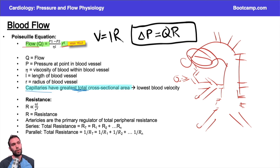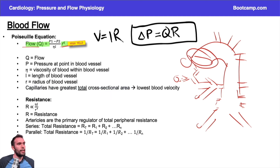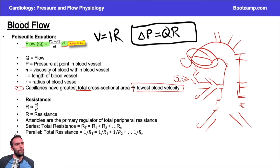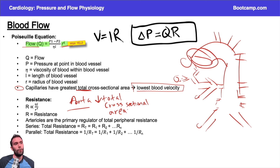If I increase the cross-sectional area, I get lower blood velocity. So capillaries have the greatest total cross-sectional area and the lowest blood velocity. The reverse is also true: the aorta has a very fast blood velocity because pressures are so high. The aorta has a low total cross-sectional area — even though its lumen looks large, there's only one of it — and because the pressure is the same but the total CSA is small, blood velocity is much higher.